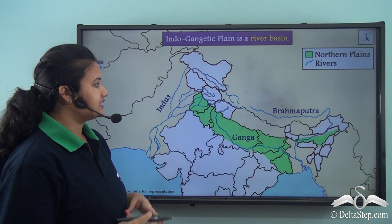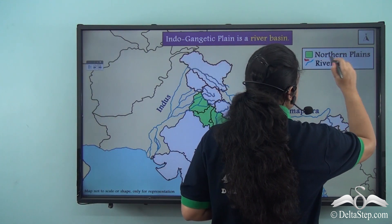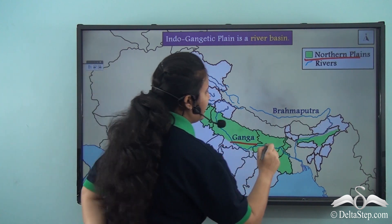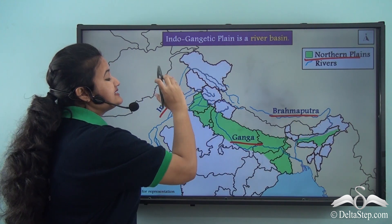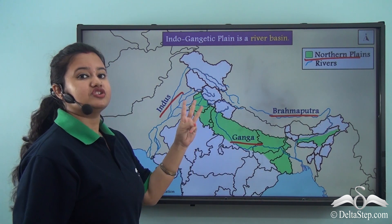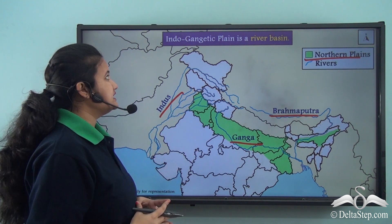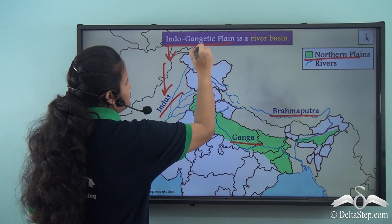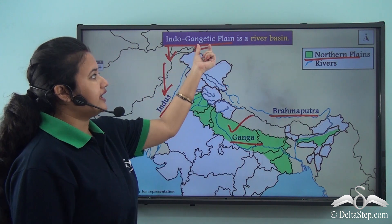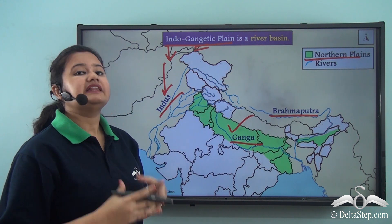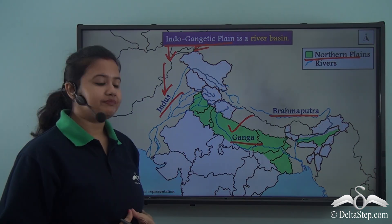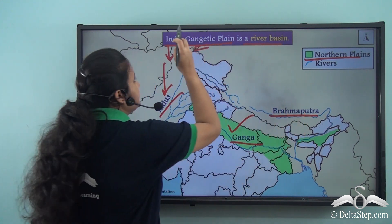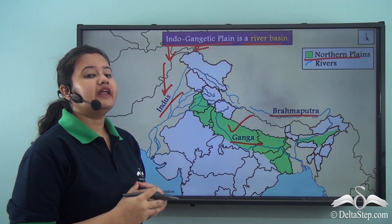The plain in the northern part of India is known as the Northern Plains. This region is drained by three major rivers and their tributaries — namely the Indus, Ganga, and Brahmaputra. Therefore, the Northern Plains of India are also known as the Indo-Gangetic Plain, where 'Indo' stands for River Indus and 'Gangetic' stands for River Ganga. Since it is drained by major rivers and their tributaries, it is also called a river basin.